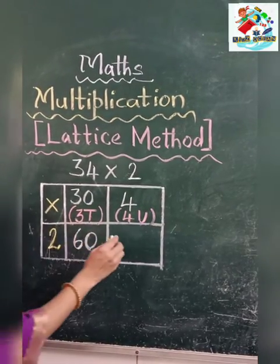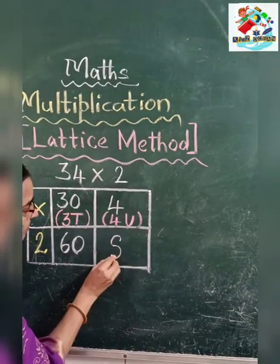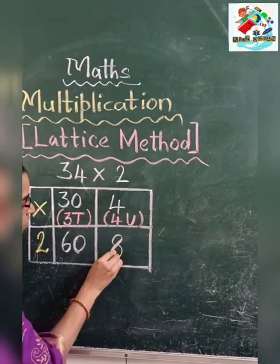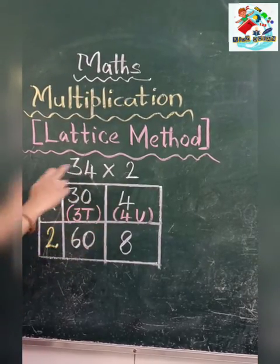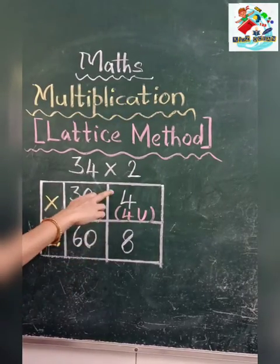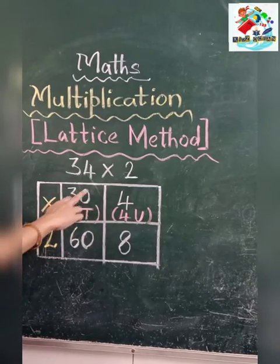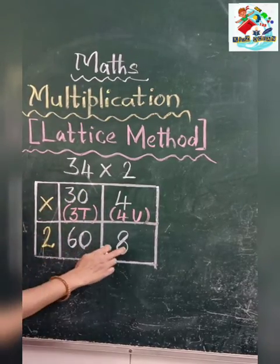2 fours are 8, you got it? 2 fours are 8. So this is our sum, you got the answer after multiplying by 2. So this is the product you got.